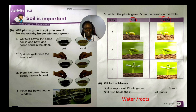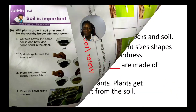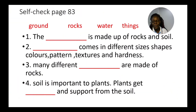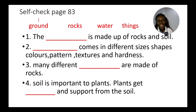Fill in the blanks: soil is important — plants get water from it, and soil also holds the roots of plants. On textbook page 83 self-check: the ground is made up of rocks and soil; rocks come in different sizes, shapes, colors, patterns, textures and hardness; many different things are made from rocks; and plants get water from the soil.